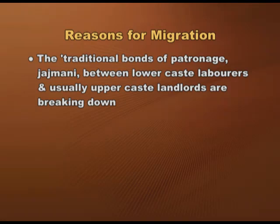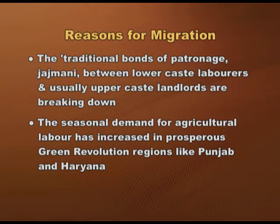In India, one can notice the emergence of seasonal migration. Every year thousands of workers circulate between their native villages and prosperous areas where there is greater demand for agricultural labor and higher wages. Two important reasons drive this: first, the traditional jajmani system — bonds of patronage between lower caste laborers and upper caste landlords — is breaking down; and second, seasonal demand for agricultural labor has increased in green revolution regions like Punjab and Haryana.